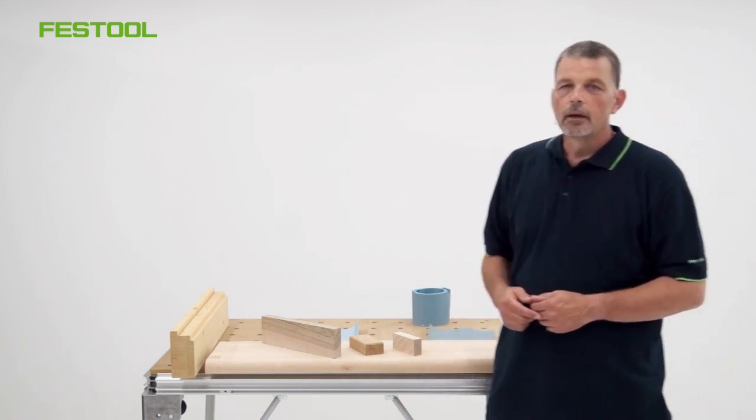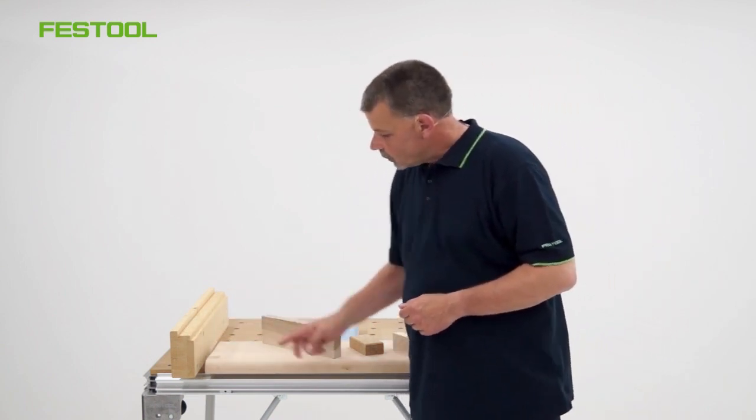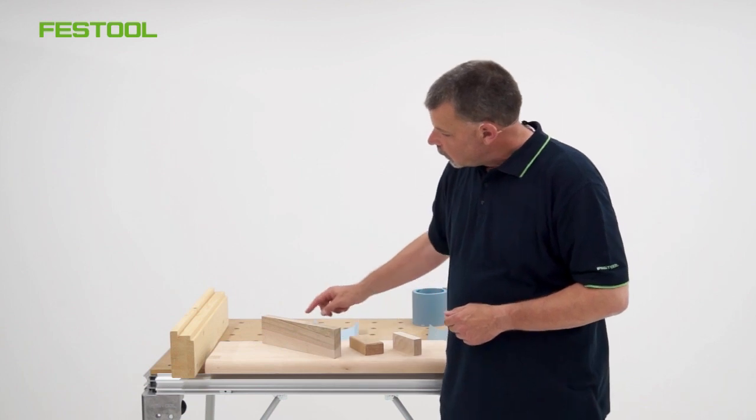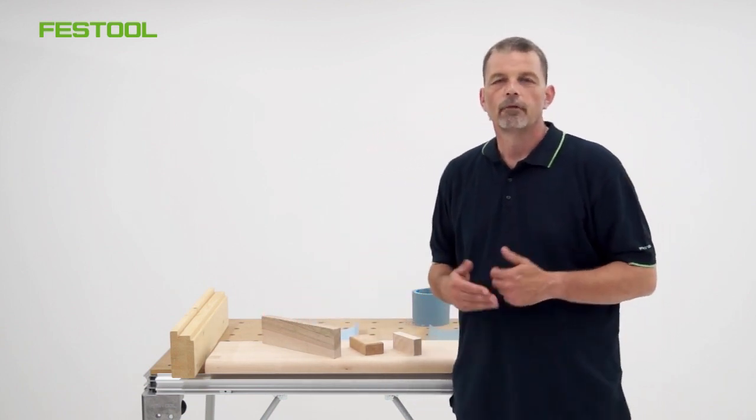So with hand sanding, if I need to remove any machining marks from a rebate such as this or a molding on this profile or to remove an aris along here, I need an abrasive with great flexibility.